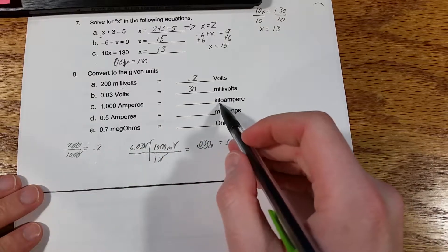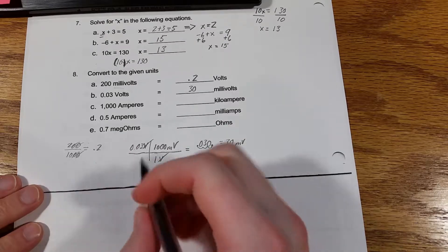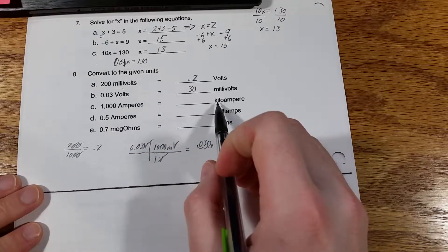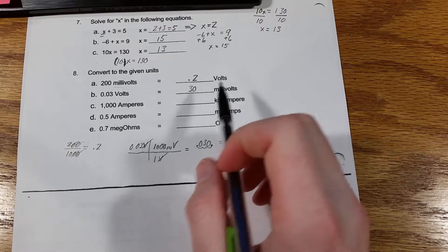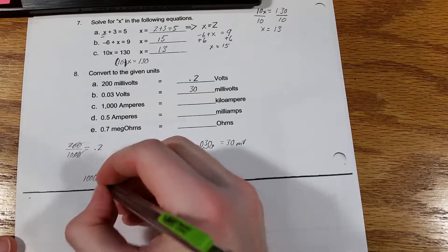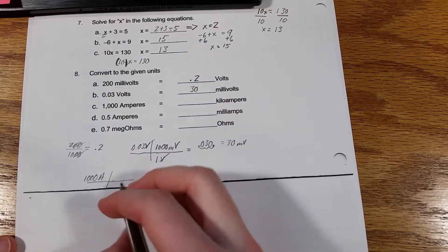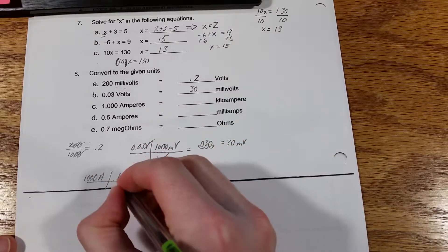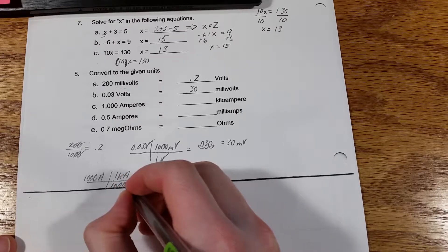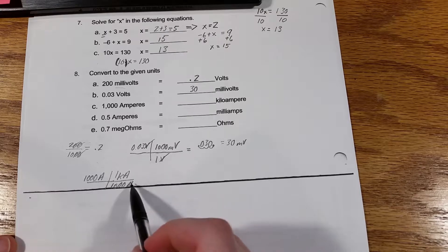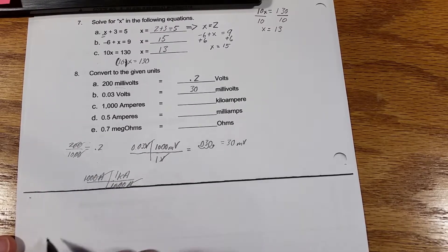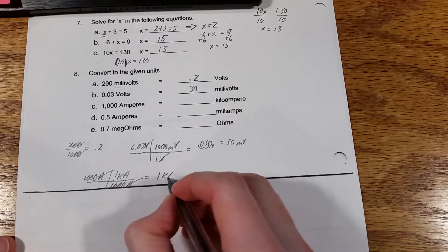C, 1,000 amperes equals how many kilo amperes? Okay, well, I know that this is the base unit, and this is the base unit times 1,000. So, 1,000 amps, and we want to get it into kilo amperes, so we'll put that on the top. So, 1 kilo amp equals 1,000 amps. So you'll notice the units cancel out, amps divided by amps is nothing, and 1,000 divided by 1,000 leaves you to just 1, so that equals 1 kilo ampere.